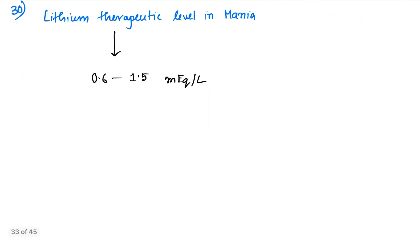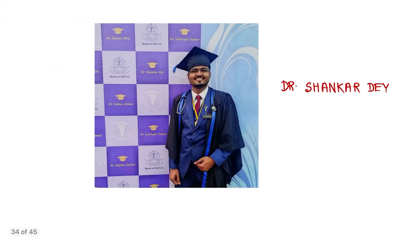Coming to question number 30. Lithium therapeutic level in mania is 0.6 to 1.5 milliequivalent per liter. So this is all about question number 21 to 30. The next set of questions we are going to discuss question number 31 to 40. So don't forget to subscribe the channel Dr. Shankar Dey. Thank you very much.